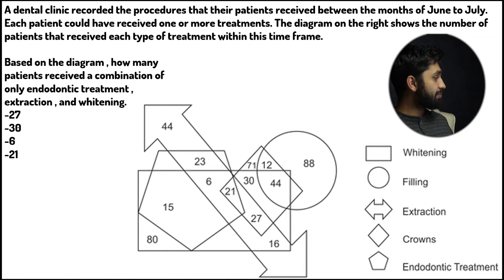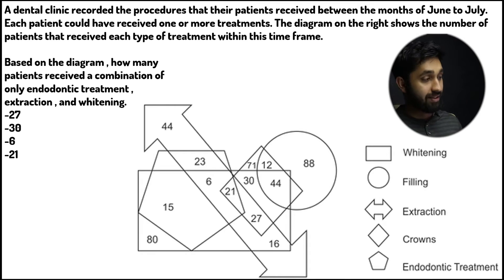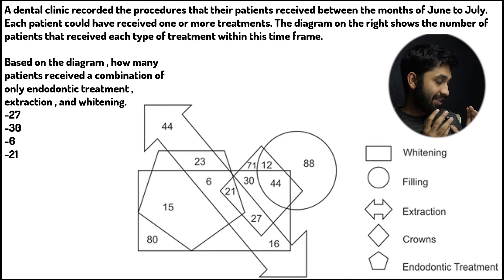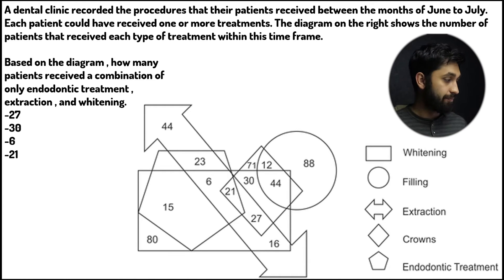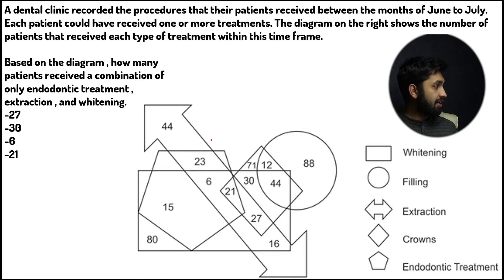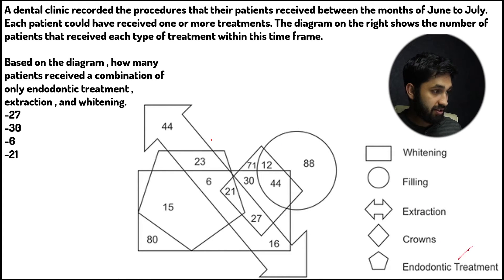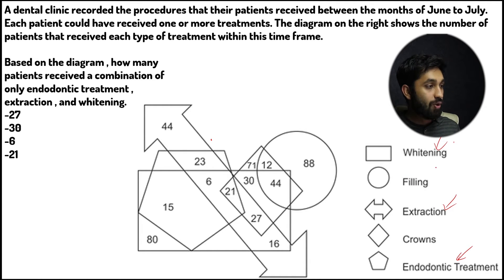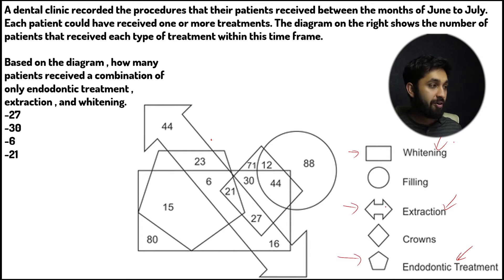Based on the diagram, how many patients received a combination of endodontic treatment, extraction, and whitening? This style of question requires you to deeply look at the diagram and really isolate the shapes. So endodontic treatment is this pentagon here, extraction is this double-headed arrow, and whitening is this rectangle. Our main focus are these three shapes: the pentagon, the double-headed arrow, and the rectangle.